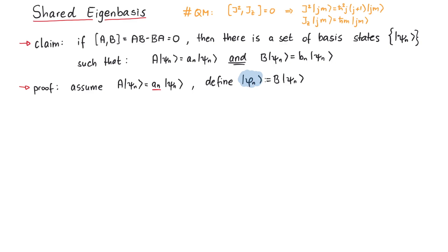Is this new phi_n also an eigenvector of A? If we let A act on phi_n, we can write it as A, B acting on psi_n.